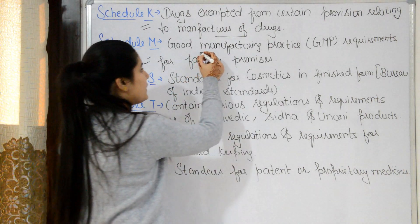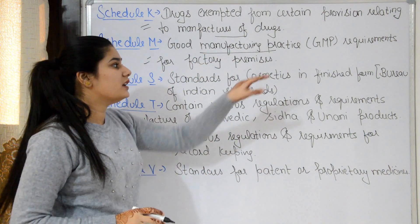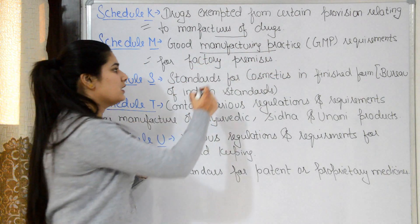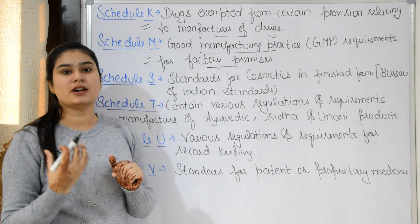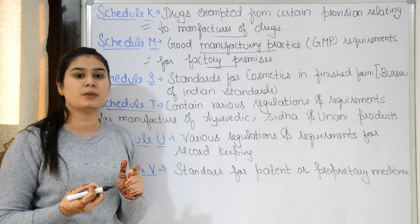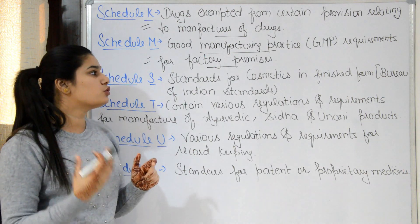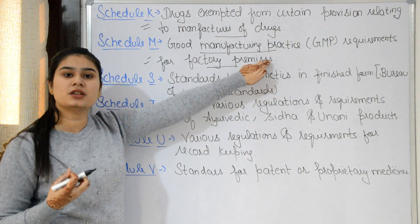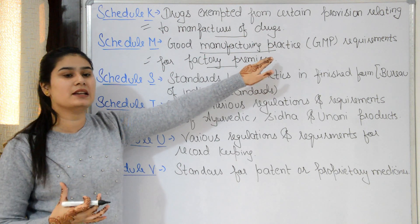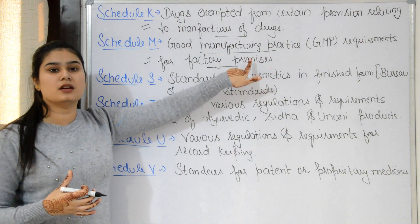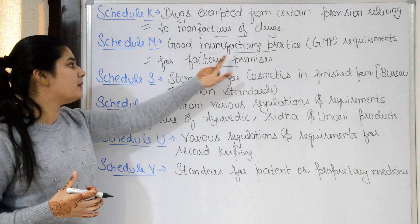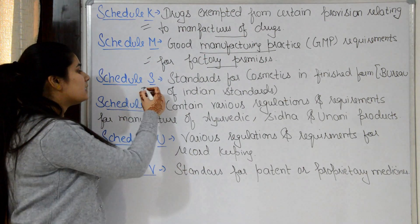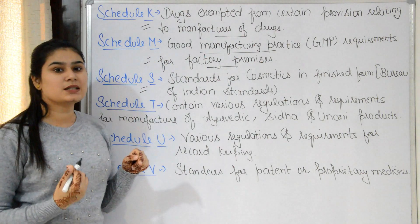Schedule M covers Good Manufacturing Practice (GMP) requirements for factory premises. For drugs and cosmetics, factory premises must meet certain requirements — such as location, surroundings, and design. These requirements are detailed in Schedule M.